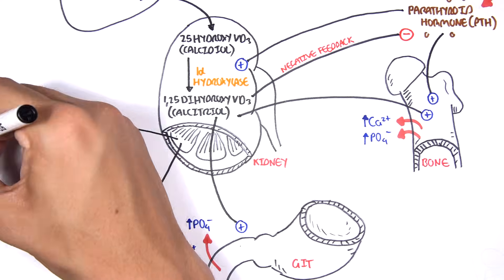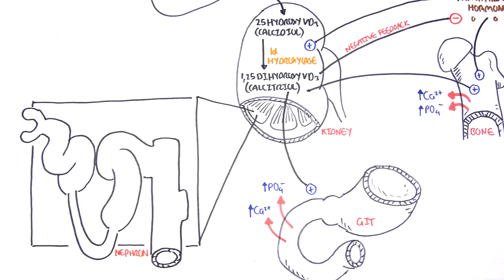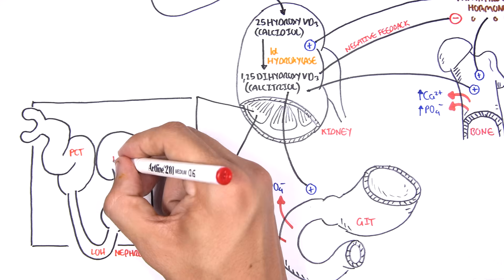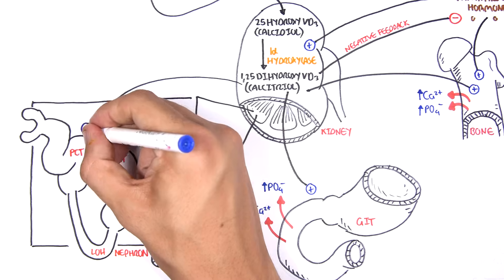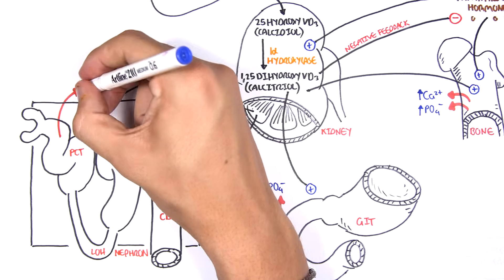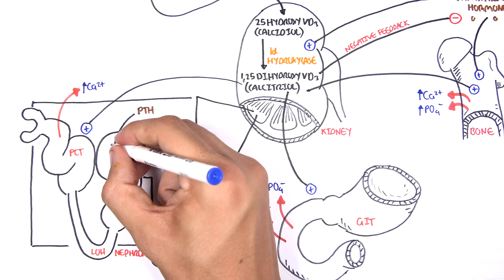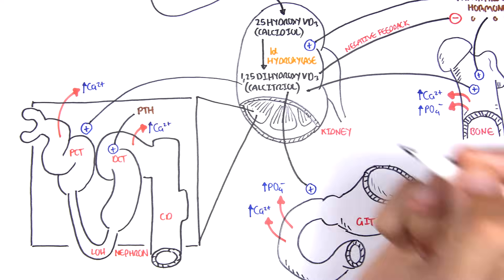Calcitriol also targets the kidneys. Zooming into the functional units — the nephrons — each nephron is made up of the glomerulus, the proximal convoluted tubule (PCT), loop of Henle (LOH), distal convoluted tubule (DCT), and collecting ducts (CD). Calcitriol targets the proximal convoluted tubules to stimulate reabsorption of calcium, increasing plasma calcium levels. Parathyroid hormone also acts on the nephron, but targets the distal convoluted tubules to reabsorb calcium, thereby increasing plasma calcium levels.